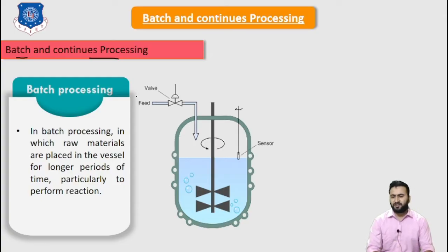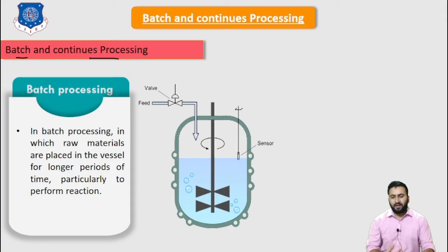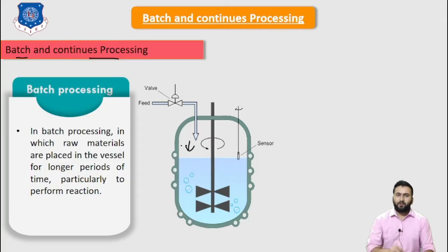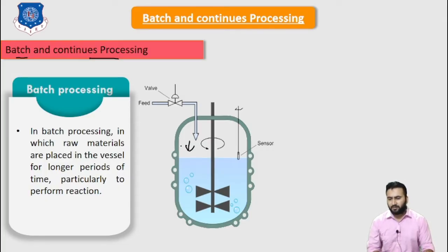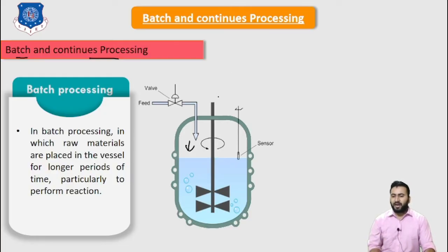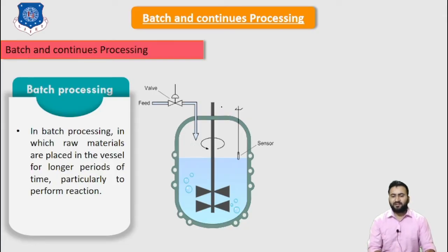In batch processing, raw materials are placed into the vessel for a long period of time, particularly to perform quality control checks or to refine the batch through a cleaning method. In batch processing, we are going to add raw material for a long period of time to perform the reaction. To understand this, let's consider this reactor.